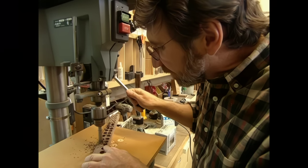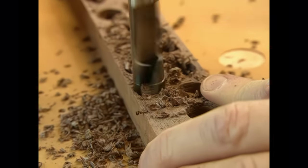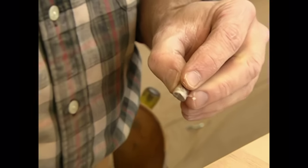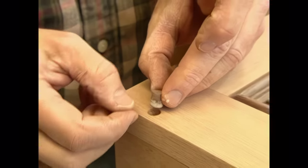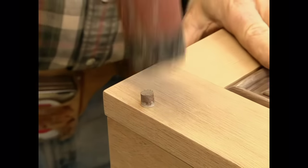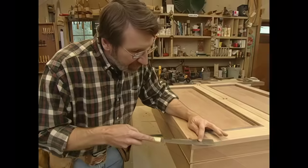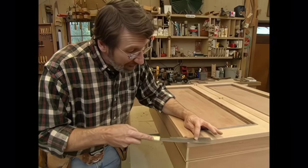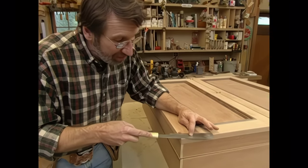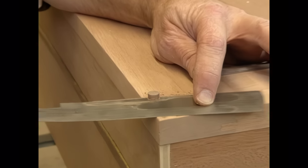Now for the plugs, a scrap of our walnut and my three-eighths inch plug cutter. Now just a little dab of glue around the plug. Set it in there and tap it down. Let those set until the glue dries. Now we'll just take our Japanese flush cut saw, which cuts on the pull, cut them flush and then sand them even.